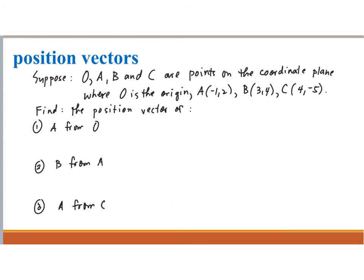Let's try another situation. Suppose O, A, B, and C are points in the coordinate plane, where O is the origin, so O has coordinates (0, 0). The coordinates of the other points are: A has (-1, 2), B has (3, 4), and C has (4, -5).